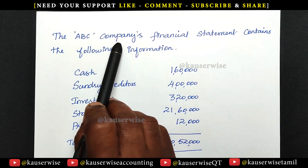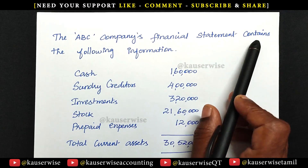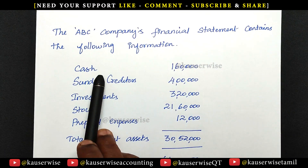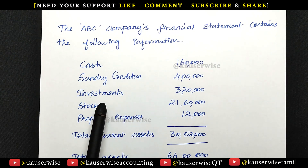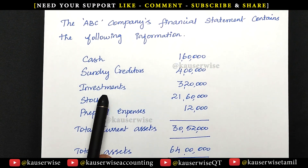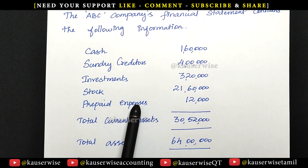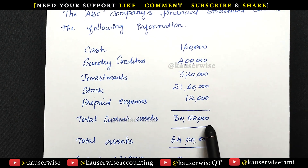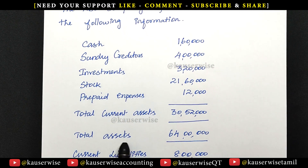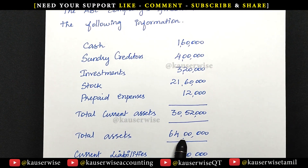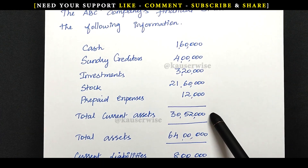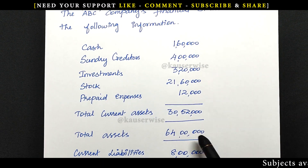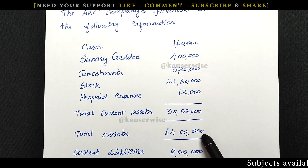ABC Company's financial statement contains the following information: cash, sundry creditors, investment, stock, prepaid expenses — giving total current assets and then total assets. Total asset consists of total current asset plus total fixed asset.